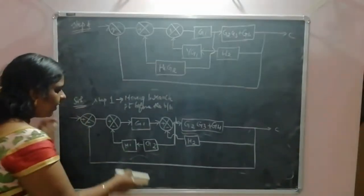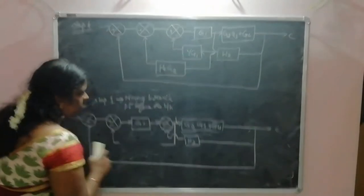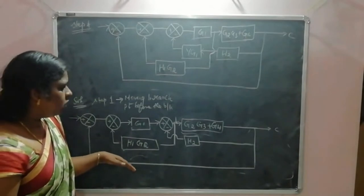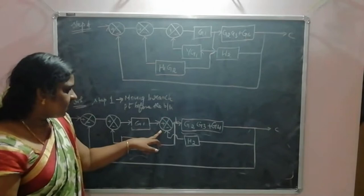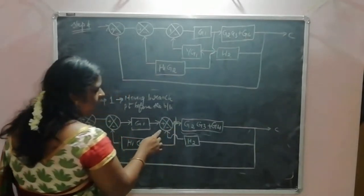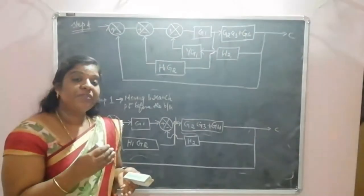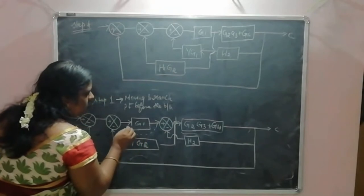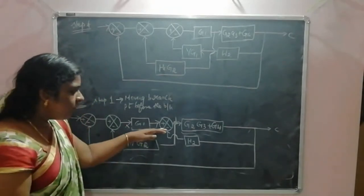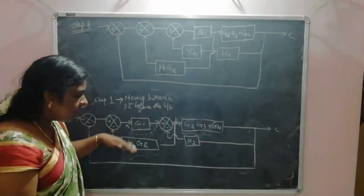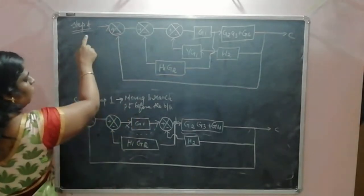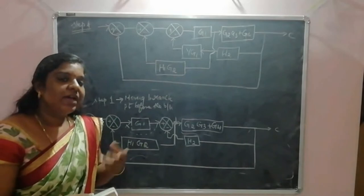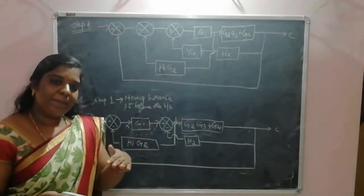So these two cascaded blocks combine. Next, to further reduce this block diagram, we have to move the summing point. Here we have a branch point and a summing point; when compared to both, we give priority to the summing point first, as that makes it easier to reduce. Moving the summing point before the block means we have to take the reciprocal of that gain. So in Step 4, in Step 1 we moved the branch point, in Step 2 we combined cascaded blocks, and in Step 3 we combined parallel blocks.